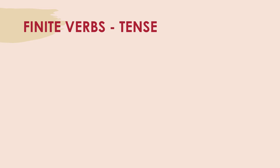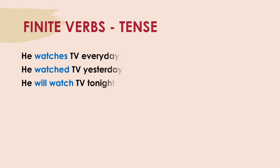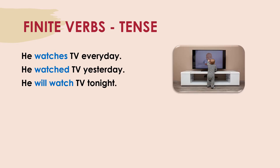Let us see how finite verbs change according to tense. He watches TV every day. He watched TV yesterday, and he will watch TV tonight. Here, 'he' is the subject. 'Watches' is in the present tense, 'watched' is in the past tense, and 'will watch' is in the future tense. So you see the main verb changing according to tense.